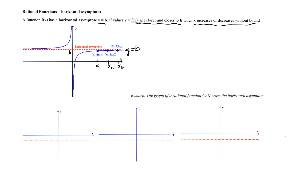The values of y for those points, and therefore the values f of x sub 1, f of x sub 2, and f of x sub 3, will be coming closer and closer to the value b as we move further and further with the values of x. Similar behavior we can notice on the other side when the values of x are decreasing without bound — corresponding points on the graph will be approaching the line y equals b, so the values of f would be coming closer and closer to b.